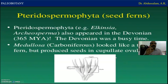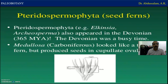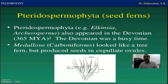Then we can say that pteridosperms — that is seed ferns. The Devonian was a busy time, around 365 million years ago. One notable plant is Medullosa, that is carboniferous, which looked like a tree fern but produced seeds in cupulate ovules. This particular type of plant is identified and is nothing but a gymnosperm.